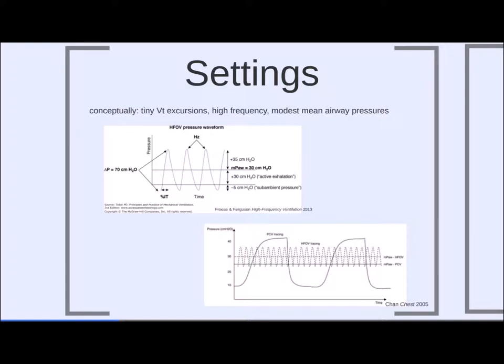We set mean airway pressure, around which the oscillator oscillates. Comparing the oscillator tracing to a pressure control tracing: pressure control has wide swings between inspiration and expiration requiring higher inspiratory pressures and a large delta P. The oscillator, by gently shaking rather than creating large pressure gradients, ends up with a higher mean airway pressure than pressure control — because it oscillates around a slightly higher mean airway pressure — but with much smaller pressure excursions.